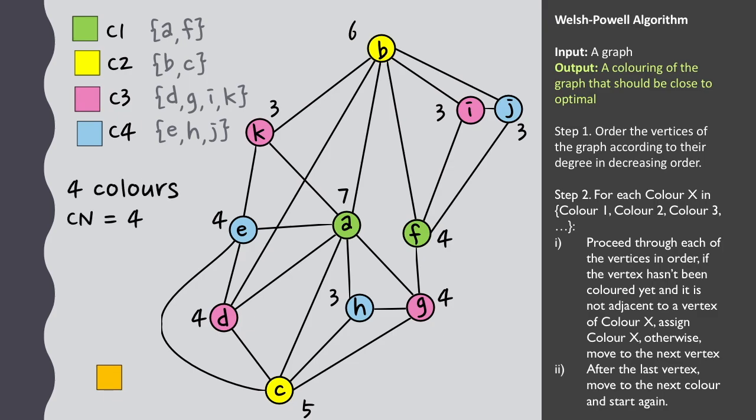Once we have this, we can do a quick check of the graph to see whether maybe it might have been possible to use fewer colors. In this case, we can identify some groups of four vertices like a, c, g and h, which are all connected to each other, so we know that it does need at least four, and hence the coloring we've obtained is optimal.